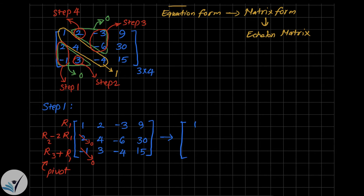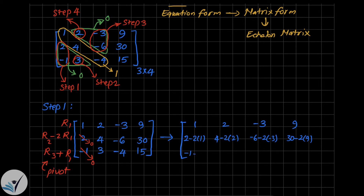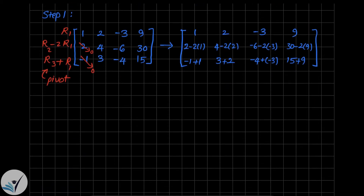The first row remains unchanged: 1, 2, -3, and 9. For the second row we compute: 2 - 2(1), 4 - 2(2), -6 - 2(-3), and 30 - 2(9). For the third row we compute: -1 + 1, 3 + 2, -4 + (-3), and 15 + 9.